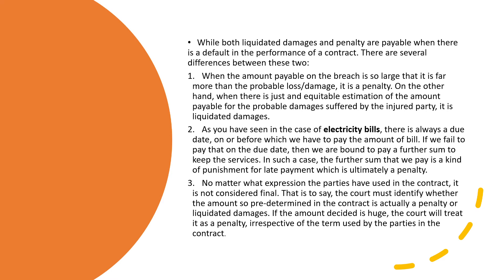Second, as seen in the case of electricity bills, there is always a due date by which we must pay. If we fail to pay on the due date, we are bound to pay a further sum — this further sum is a kind of punishment for late payment, which is ultimately a penalty. Third, no matter what expression the parties have used in the contract, the court must identify whether the predetermined amount is truly a penalty or liquidated damages. If the amount decided is huge, the court will treat it as a penalty regardless of the term used by the parties.